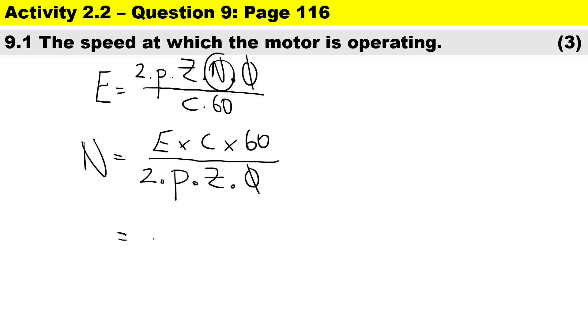We'll substitute everything in here. The back emf that was given to us was 375 volts. This machine is wave wound so therefore there are two parallel paths divided by two. This is a six pole machine so therefore there are three pairs, and the total number of armature conductors was 300, and the flux per pole, in order to convert milliweber to weber I'll just write it as a fraction. And the speed in revolutions per minute is 625 revs per minute.